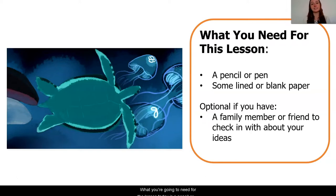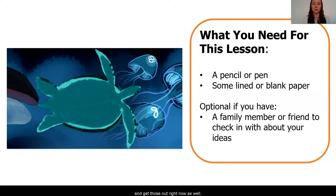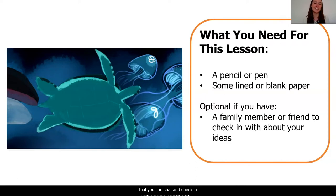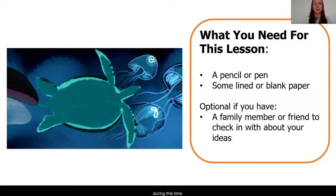What you're going to need for the lesson today is a pencil or pen, some lined or blank paper, or if you have the packet pages available for lesson three, you can get those out right now. Something that's optional but encouraged is to have a family member or a friend that you can chat with. We're going to be analyzing some evidence, so it'll be really useful to see if others are agreeing with your thinking.